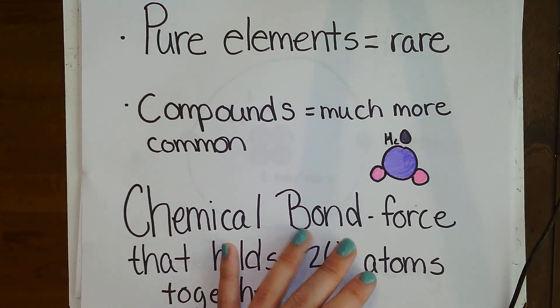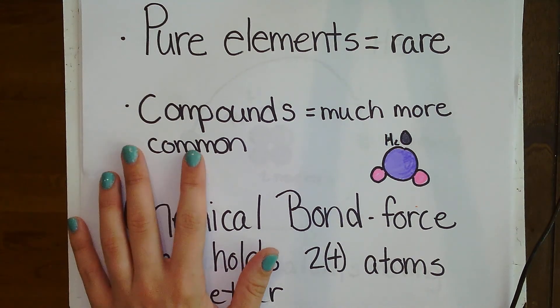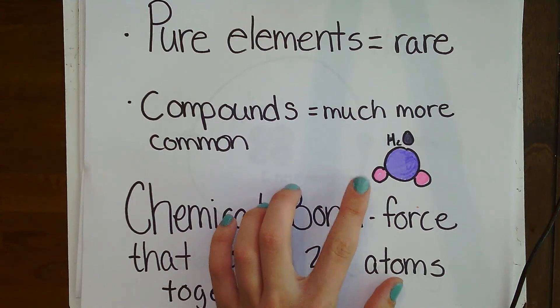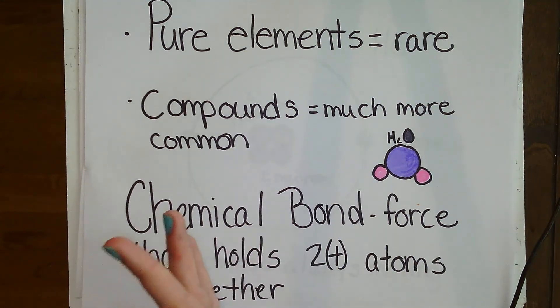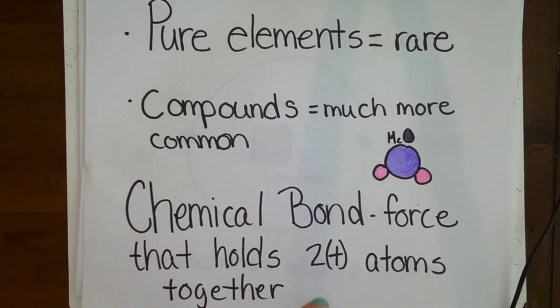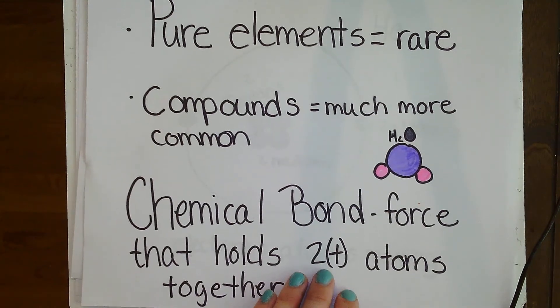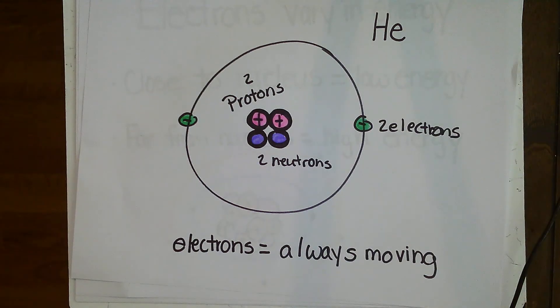In nature, elements are often combined. They are very rarely purely found. We learned about this last cycle. It's much more common for compounds to form. A very common example of a compound we're all familiar with is H2O. Two hydrogen, one oxygen, and that creates the compound of water. This is what we call a chemical bond - a force that holds two or more atoms together. We learned a lot of this last cycle, but now we're going to dive deeper into what that means.